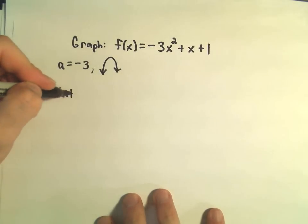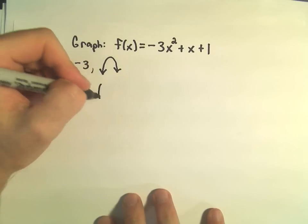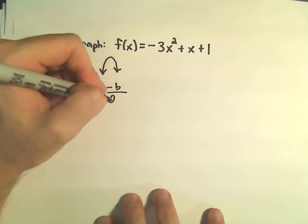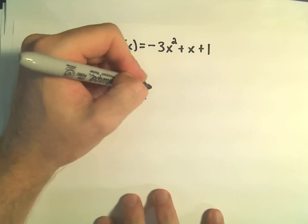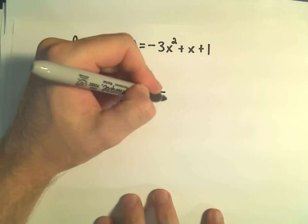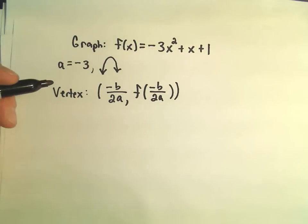The vertex, remember, we can find the vertex either by completing the square or by using this formula negative b over 2a and then f of negative b over 2a. So that's what I'm going to use in this case.